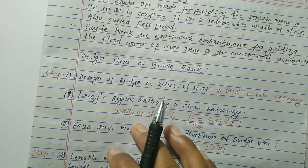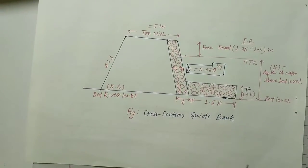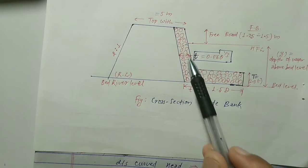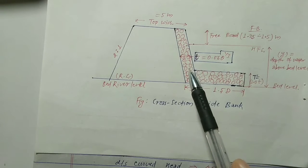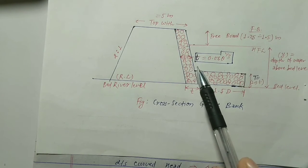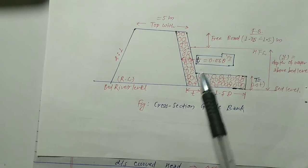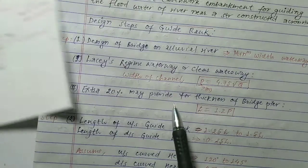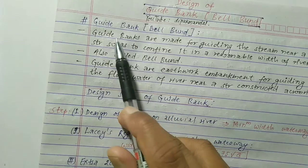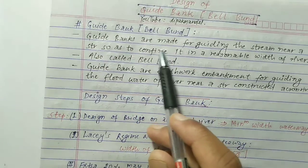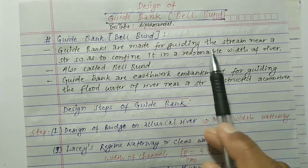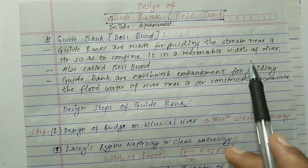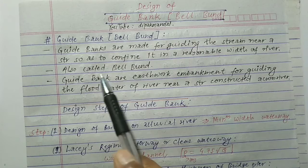First, what is a guide bank? You can see here in this figure — this is the typical cross-section of a guide bank. On the side you can see the lining, which is provided with boulders or concreting. This guide bank is provided for protection from scouring. It is also called a bell bond.